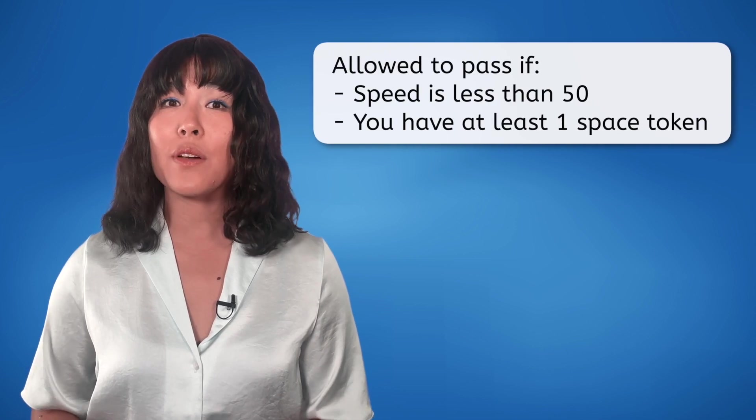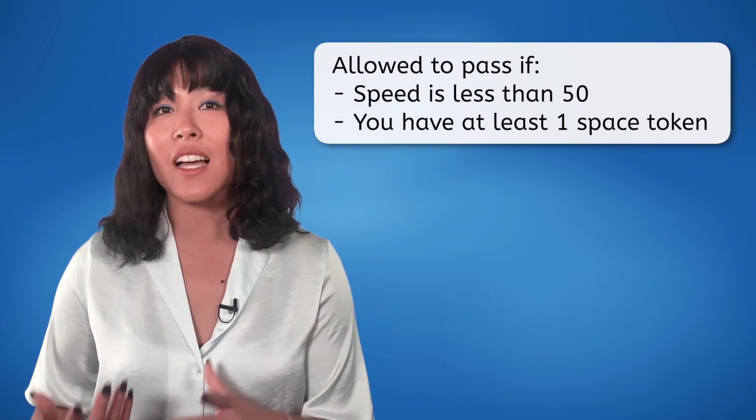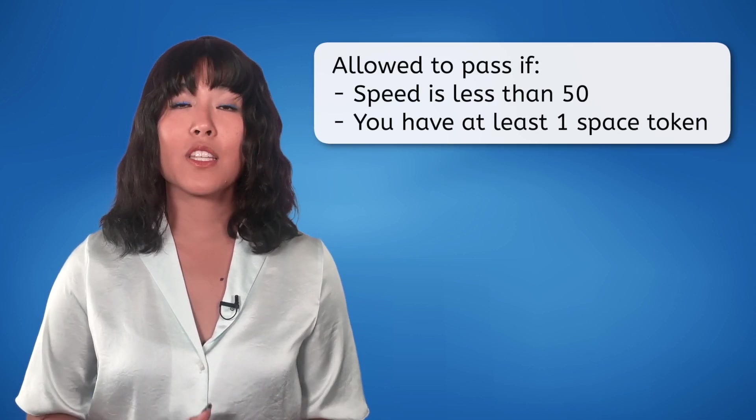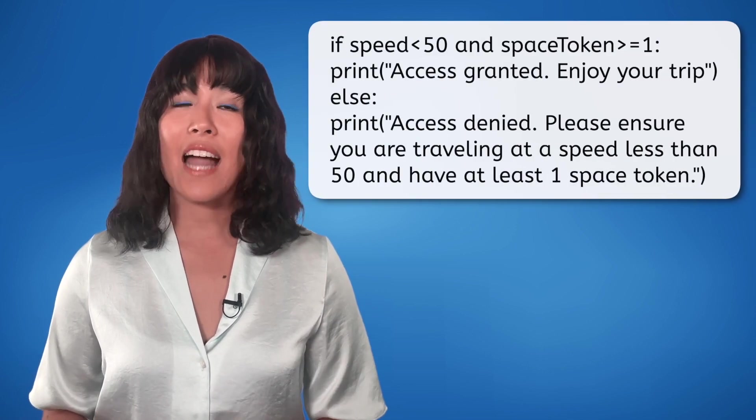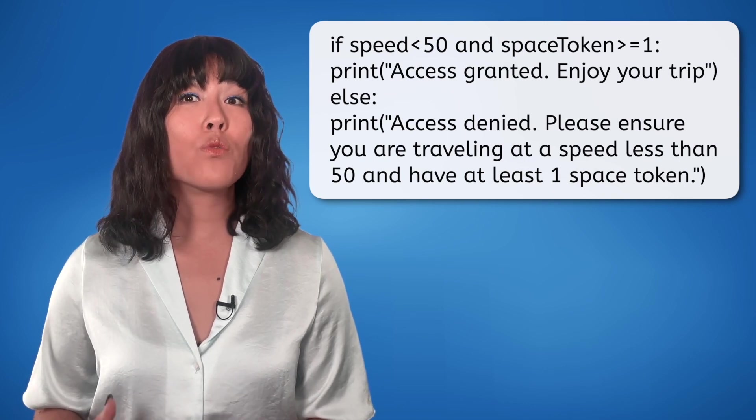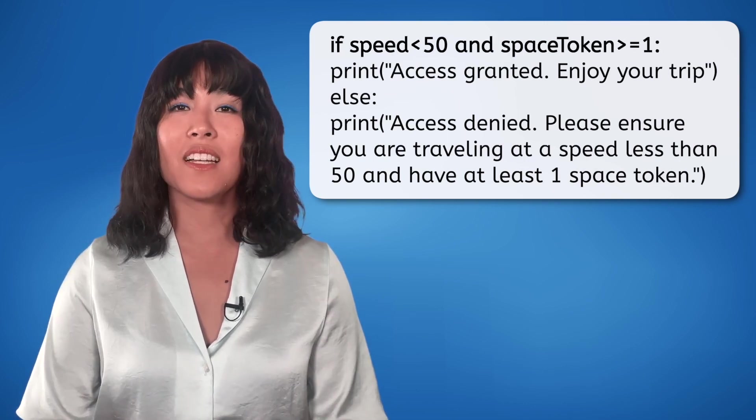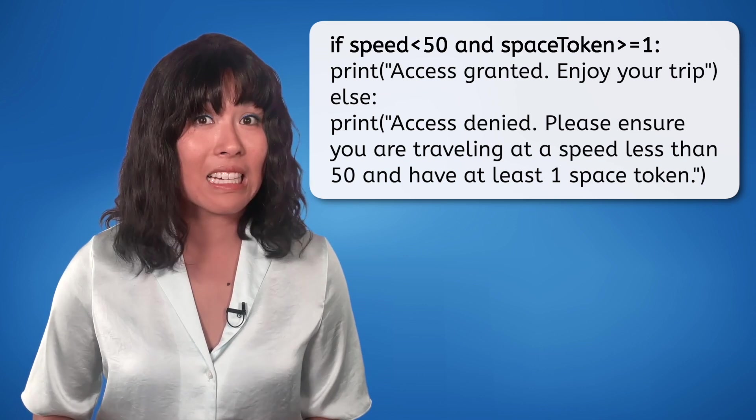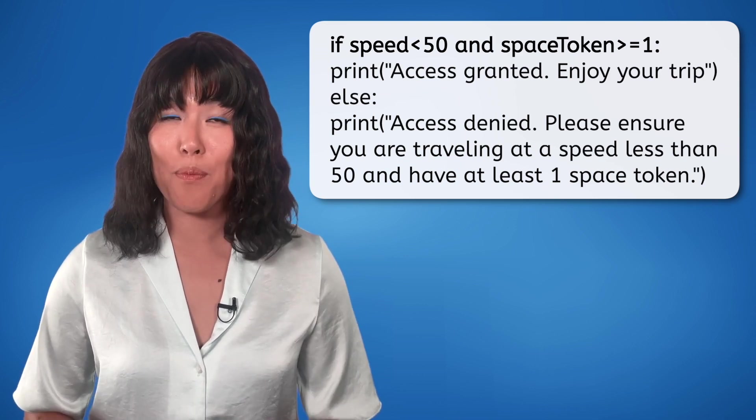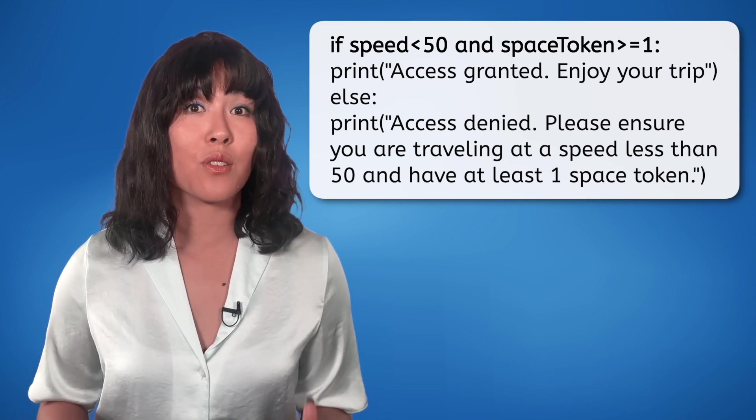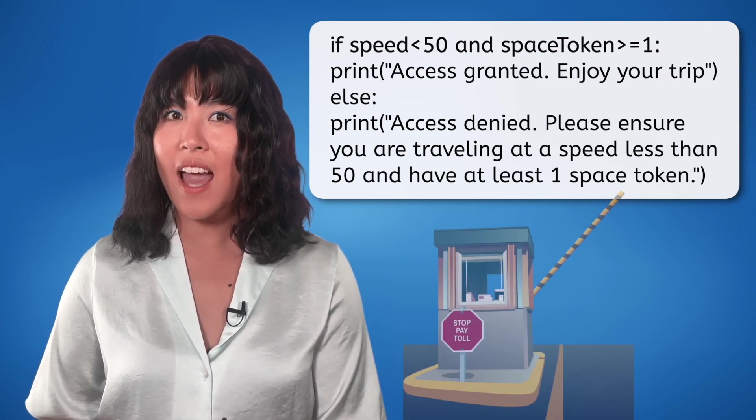Imagine you are a galactic gatekeeper safeguarding a space highway. Your ship is only allowed to pass if its speed is less than 50 and if you have at least one space token to pay for passage. In this snippet, access to the highway is granted only when we are traveling at a speed less than 50 AND have one or more space tokens. The AND operator ensures both conditions are met before granting access.